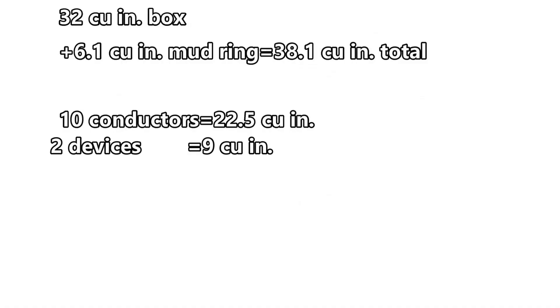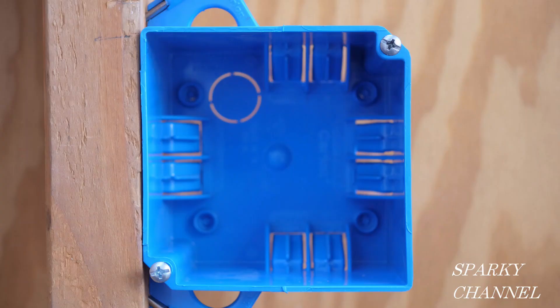So we add the two devices to the 10 conductors and now we have 31.5 cubic inches. How about the integral box clamps? Some people feel that they should be part of the calculations for box fill. So let's call these internal clamps and see what the code has to say about them.